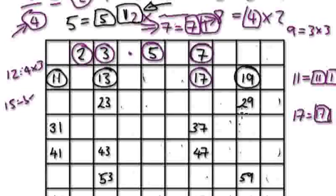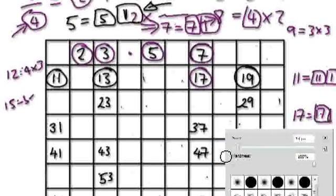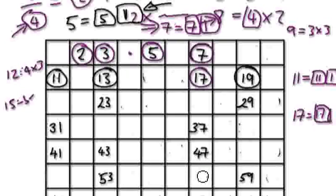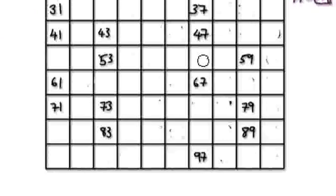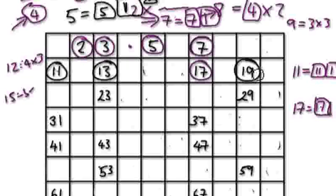So 19 is the next prime. Instead of counting 19 steps, just jump to 10, then 20, and go back 1 — so 19 would be here. And again: 10, 20, go back 1 — 19's here. 10, 20 — 19's here. There are no other multiples of 19. So 19 is a prime.